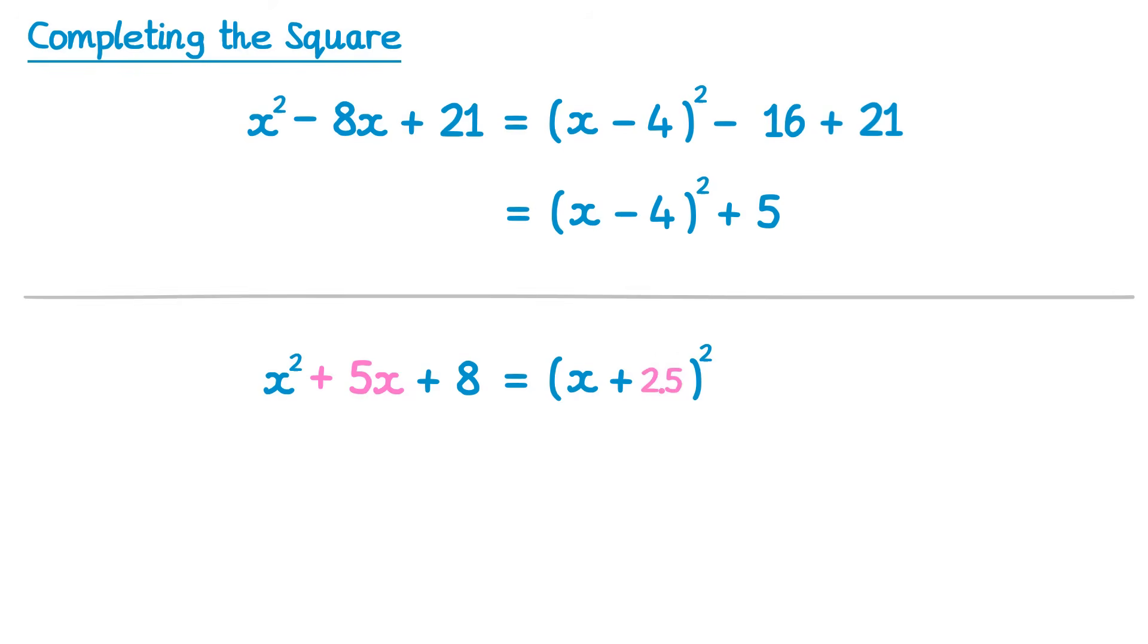Now half of 5 is 2.5, but dealing with decimals in the completed square form can be quite tricky, especially because in a moment we're going to have to square 2.5. It's usually easier when the coefficient of x is an odd number just to write it as a fraction instead. So half of 5 is just 5 over 2.